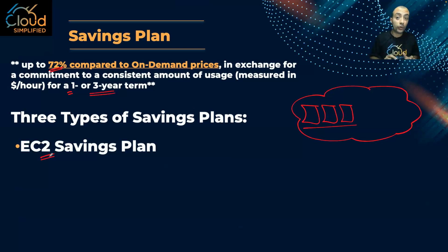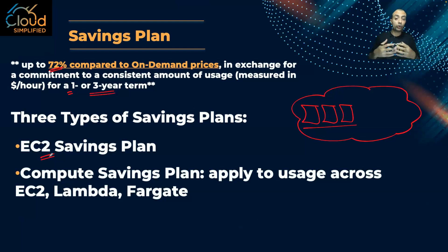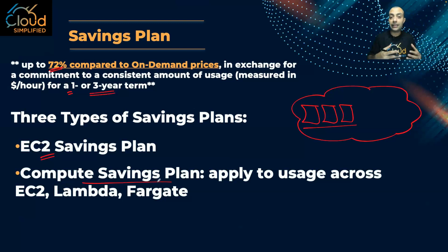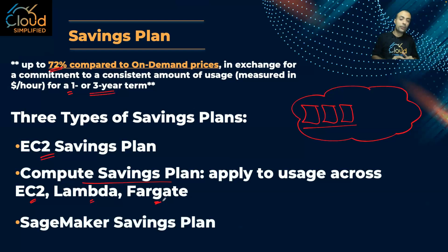There are three types of Savings Plans. First, the EC2 Savings Plan, which is only for EC2 instances. Second, the Compute Savings Plan, which is more flexible — it covers EC2 but also allows you to shift later to containers or serverless compute like Lambda or Fargate. Third, there is also a SageMaker Savings Plan, which applies to machine learning workloads with SageMaker.